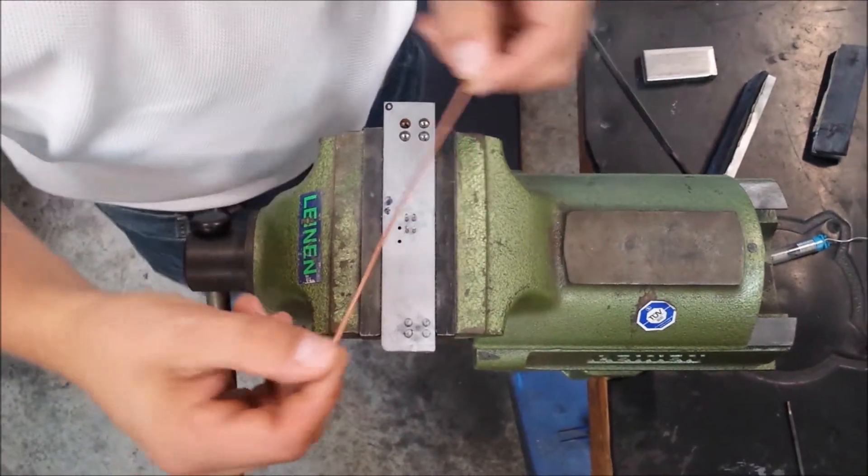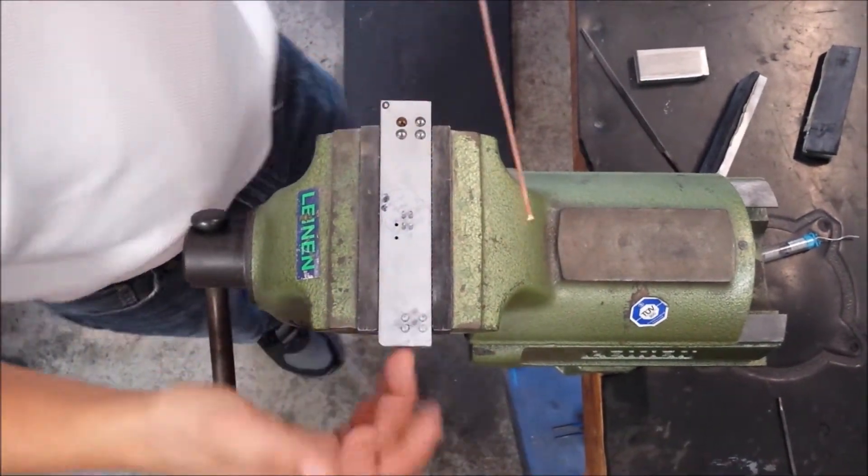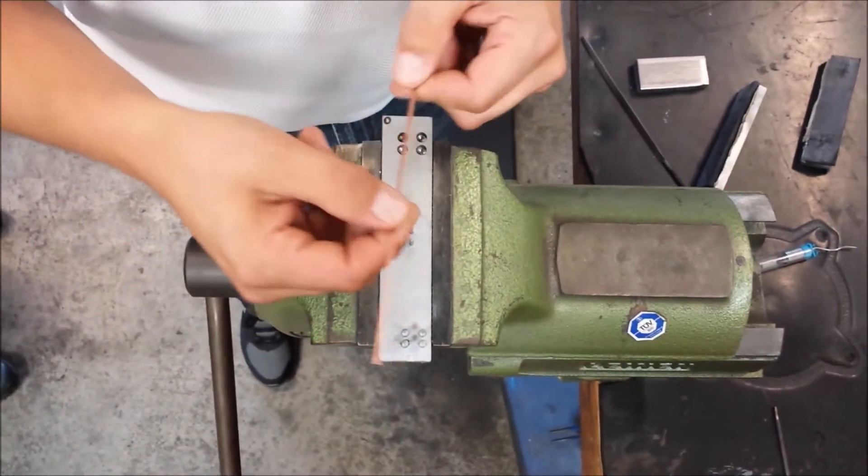We start with a piece of copper tubing about the same length as the bending fixture. Before clamping the bending fixture in the vise, we straighten the copper tube in all directions.